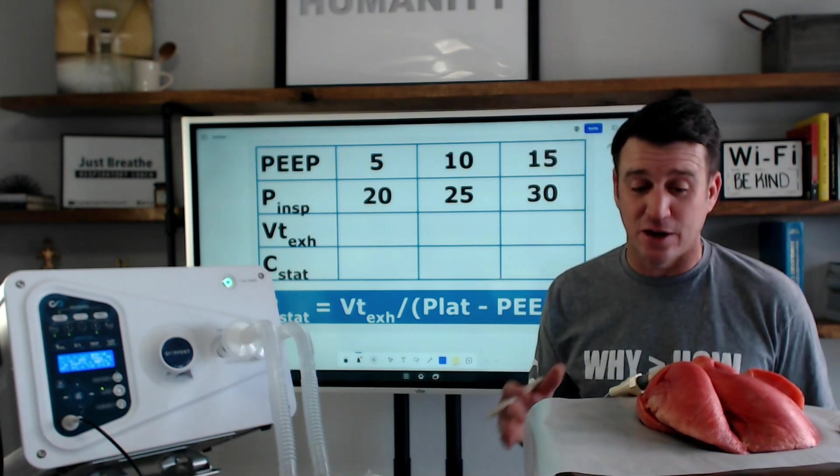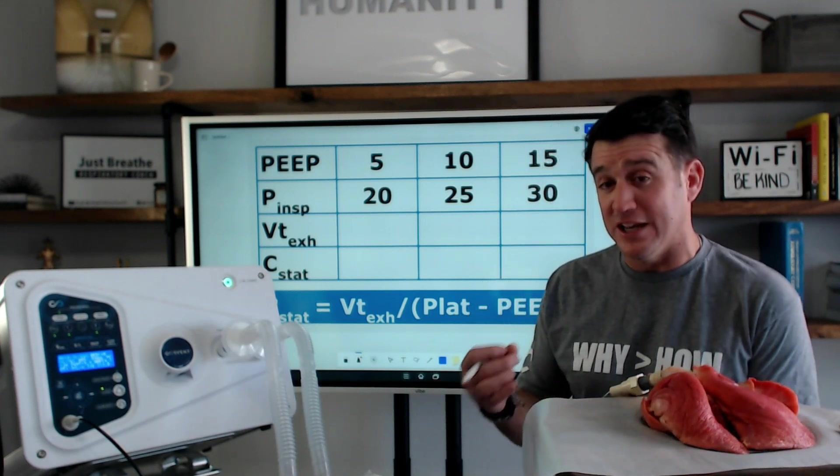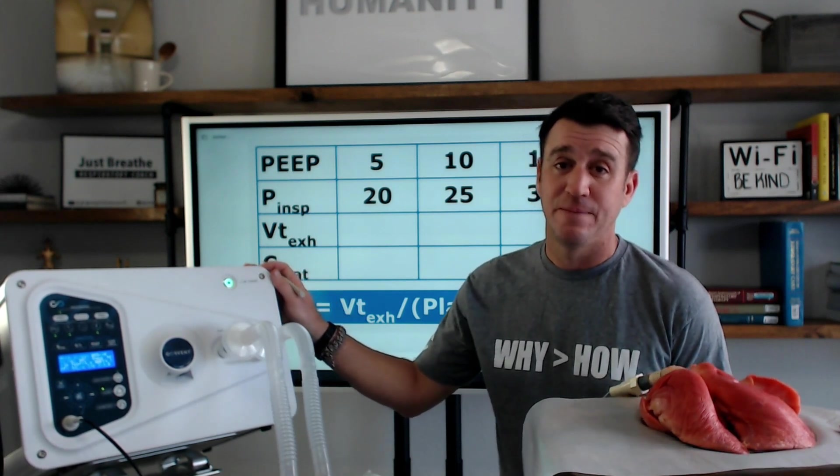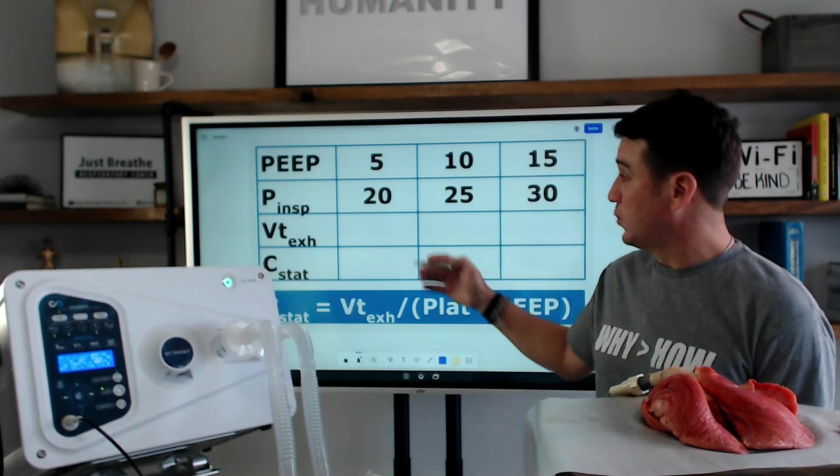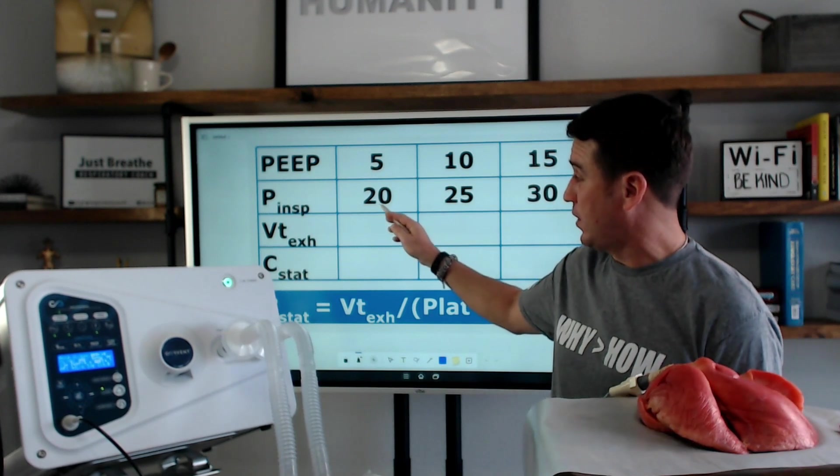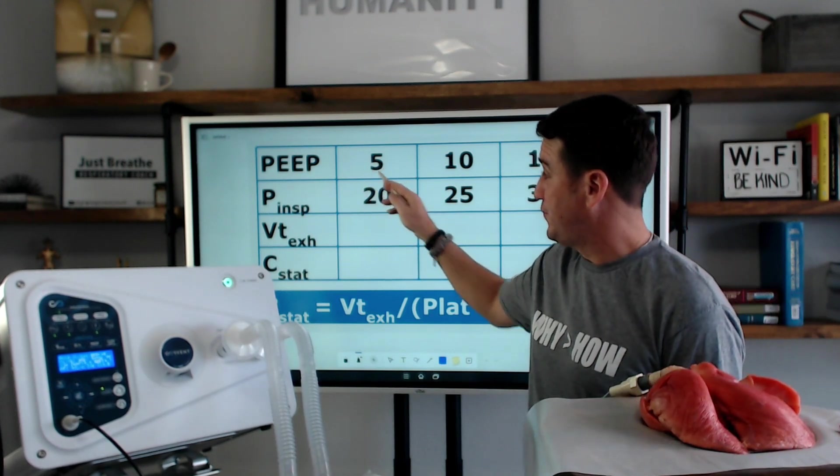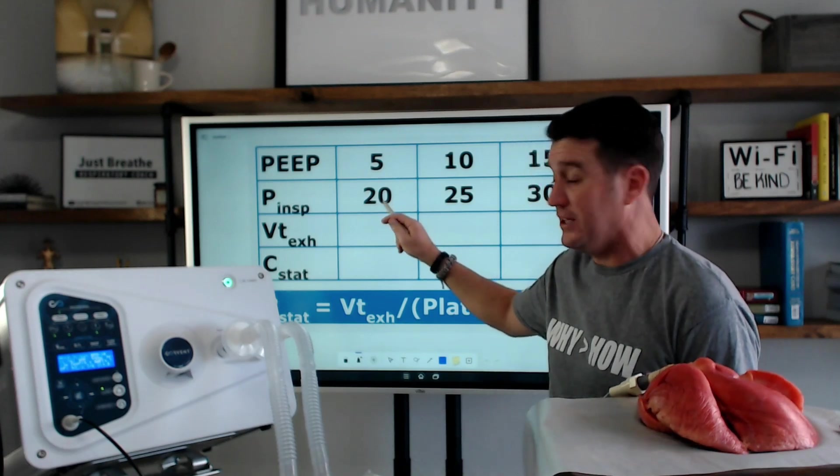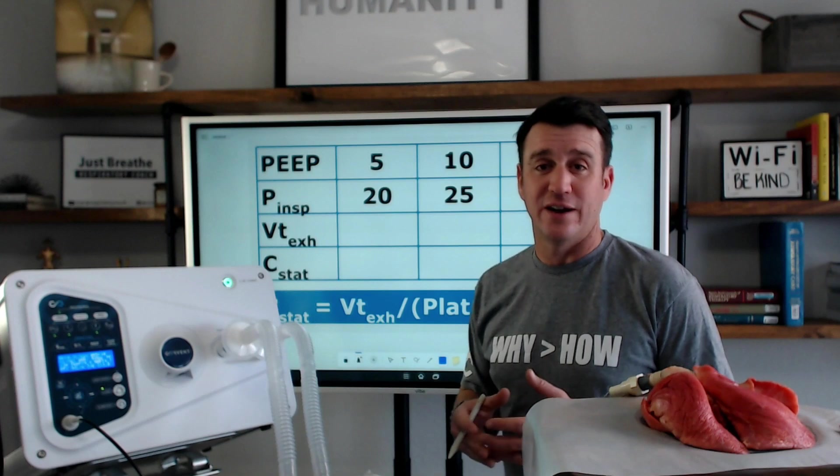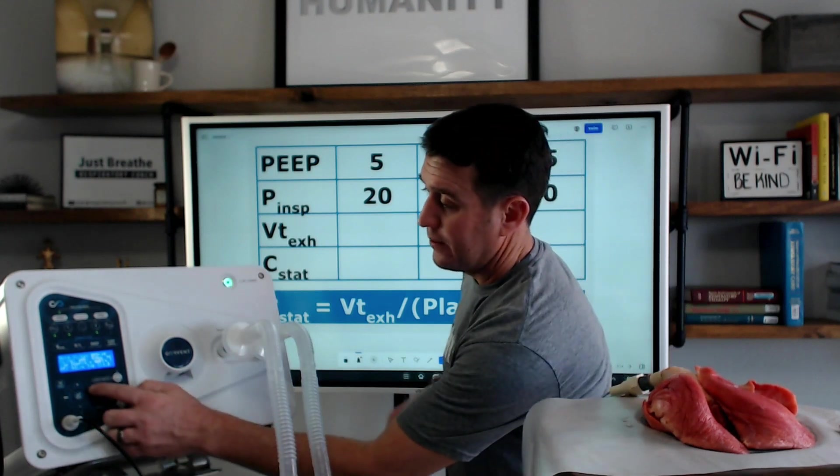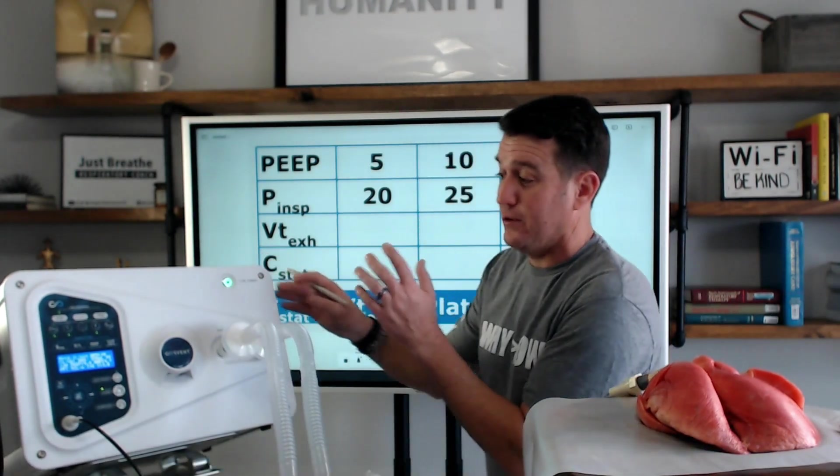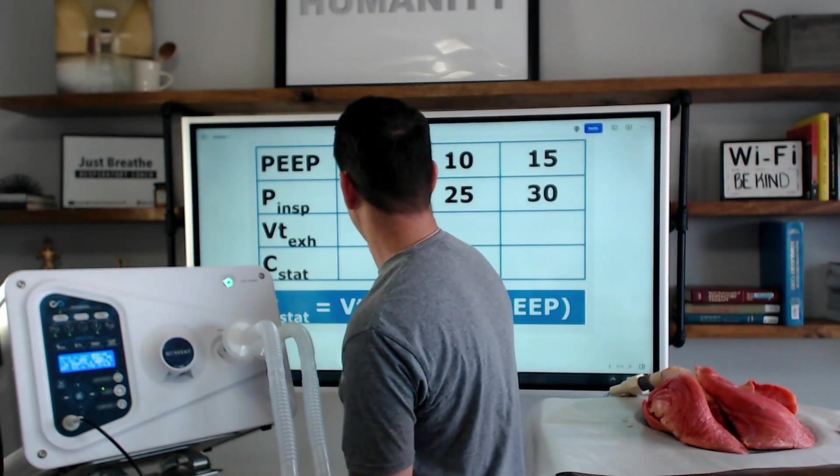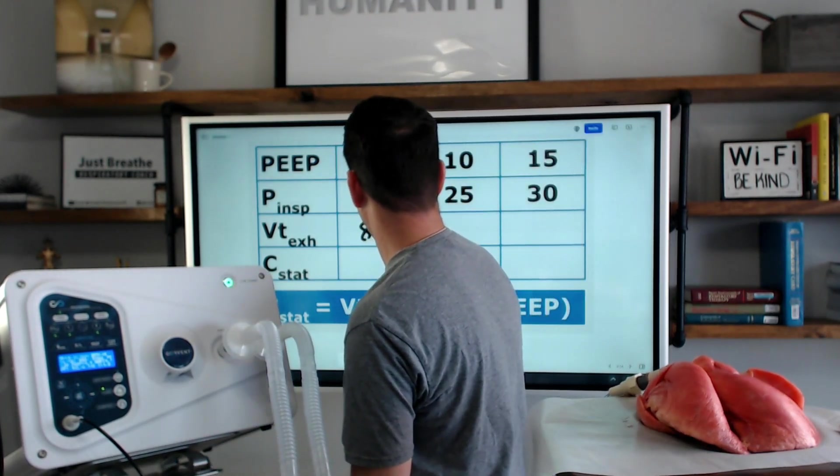What we need to do here is say, on 5 with an inspiratory pressure in pressure control of 15, what is our exhale tidal volume? Because we know if we put 15 centimeters of water pressure on top of 5 centimeters of water pressure of PEEP, then our peak inspiratory pressure is going to be 20. So, the question is, what is our exhale tidal volume? When we take a look at that, we see currently right now our exhale tidal volumes are 800.